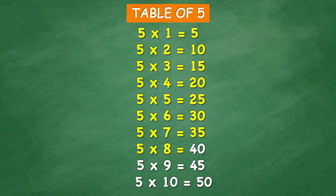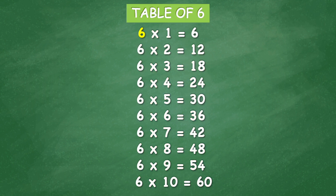Table of 5: 5 times 8 equal 40, 5 times 9 equal 45, 5 times 10 equal 50.